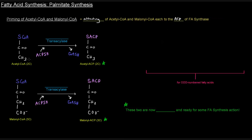The two substrates we're priming are acetyl-CoA and malonyl-CoA. Both have coenzyme A attached via thioester linkages. We're going to replace that thioester linkage to coenzyme A with a thioester linkage to the acyl carrier protein — turning acetyl-CoA into acetyl-ACP, freeing up the coenzyme A. That reaction is catalyzed by acetyl-transacylase.